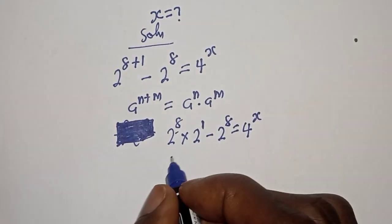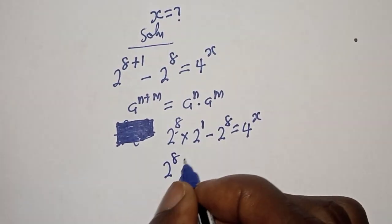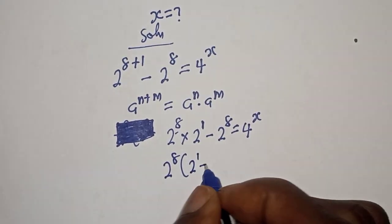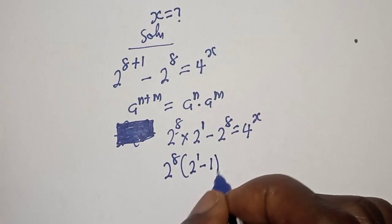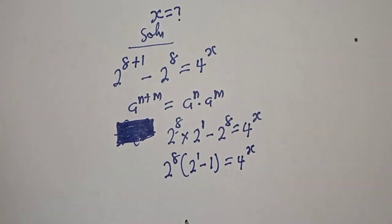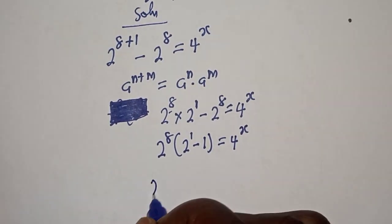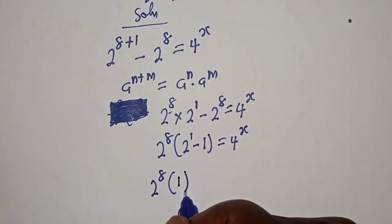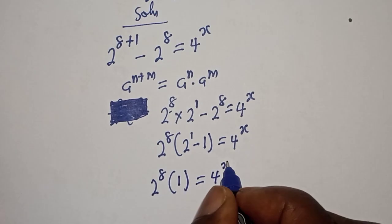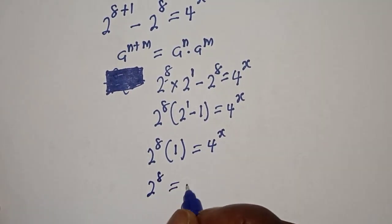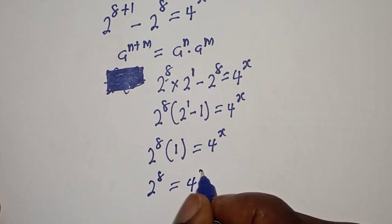Then 2 raised to power 8 is common. We factor out 2 raised to power 8, giving us the bracket: 2 raised to power 1 minus 1, is equal to 4 raised to power s. This simplifies to 2 raised to power 8 times bracket 2 minus 1, which is 1. So we have 2 raised to power 8 is equal to 4 raised to power s.